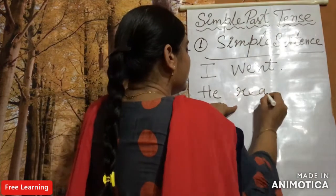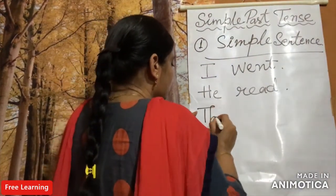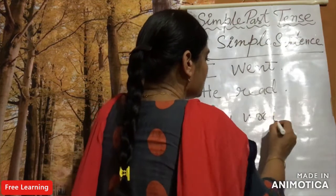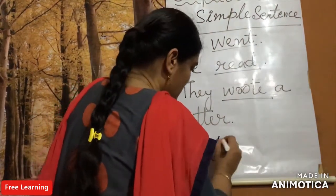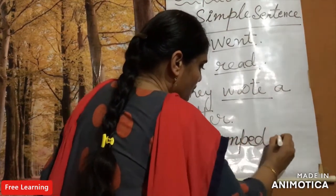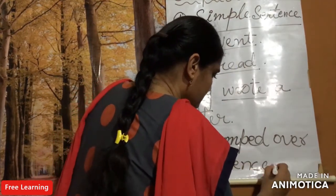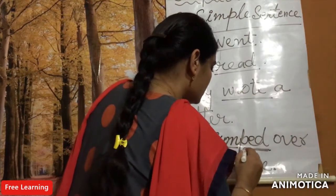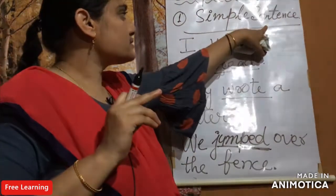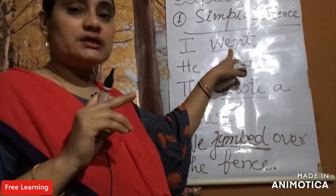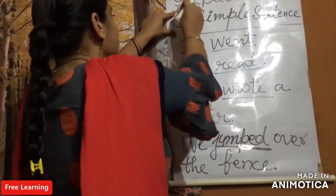Another example: 'He read' — same spelling but the pronunciation is changed, we say 'read'. They wrote a letter. We jumped over the fence. 'Jumped' is also the past tense verb, the second form of the word. So always in simple sentences of simple past tense, use the second form of the word.